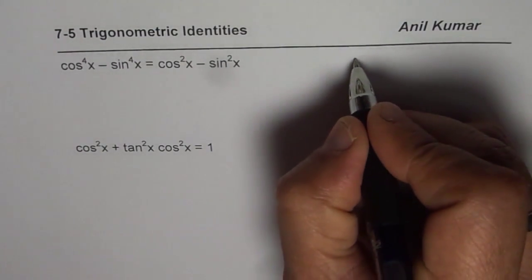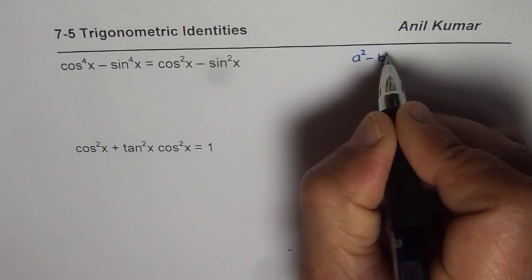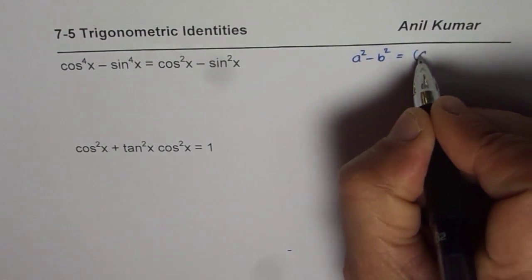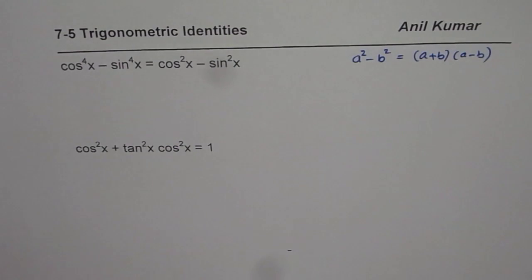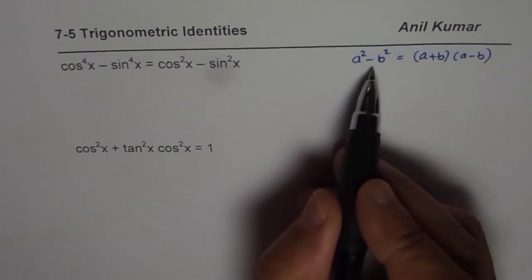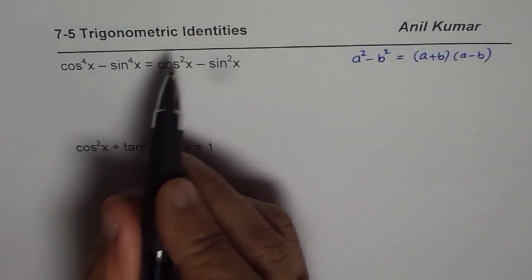The strategy is to use a square minus b square equals to a plus b times a minus b formula, the difference of squares formula. Always in such terms this is going to help you. So we will apply this formula here and see how to prove this identity.